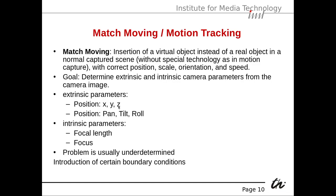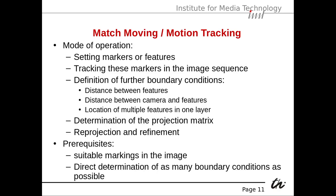The extrinsic parameters are the position X, Y, Z and the orientation pan, tilt, and roll. The intrinsic parameters are the focal length and the focus. The problem is usually under-determined, so we need to introduce boundary conditions. The mode of operation is: set markers or features in the scene, track them in the image sequence, define further boundary conditions like the distance between features or between camera and features, and then determine the projection matrix of the virtual camera. We can then use reprojection and refinement.